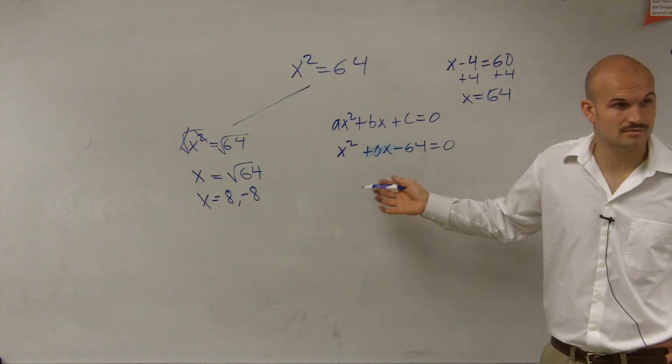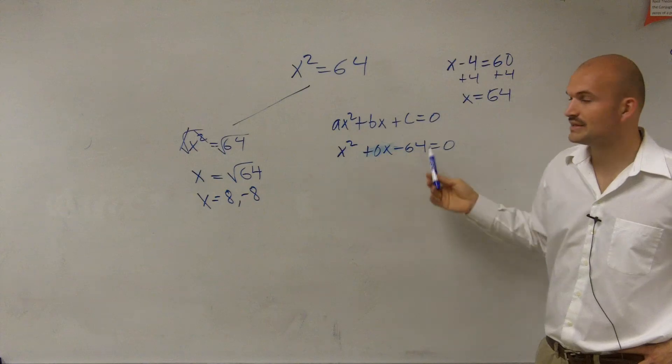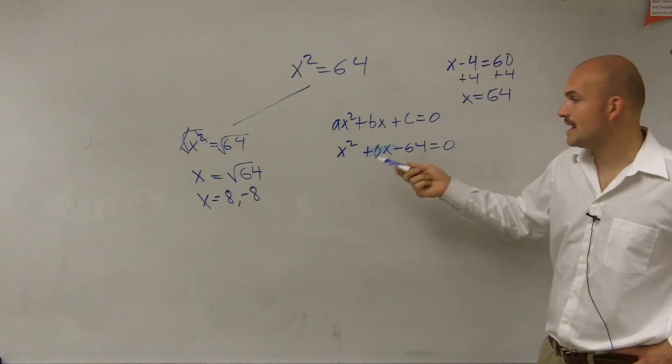Would that make sense? Because 0 times x is what? 0. I subtract the 64 to the other side. So now, everything's on the same side. I have 0 over here.